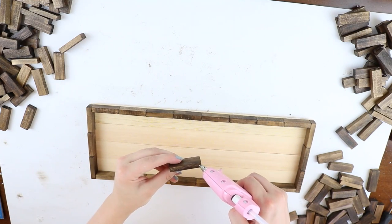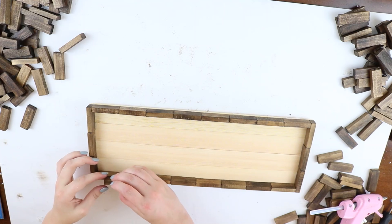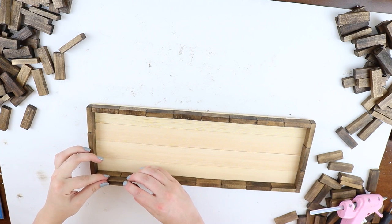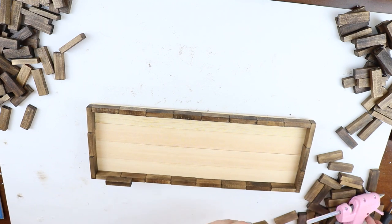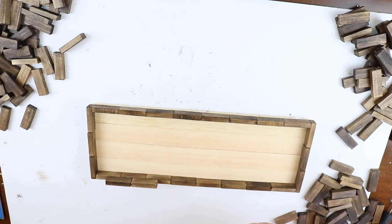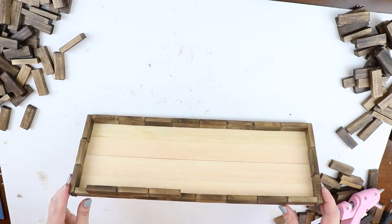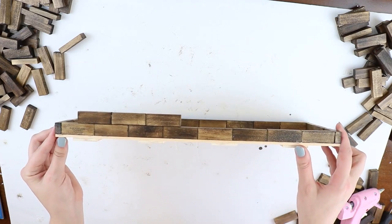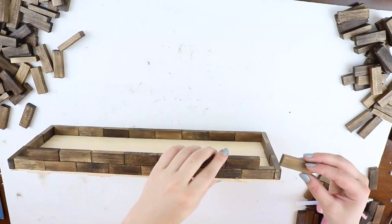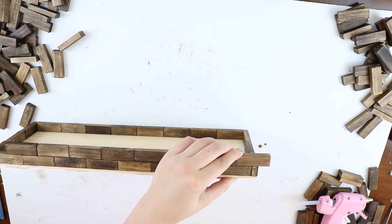When you move on to the second row, you'll want to offset each block just to give it a nice pattern. When you offset the row, you will end up with a little bit on the end that just needs to be cut.